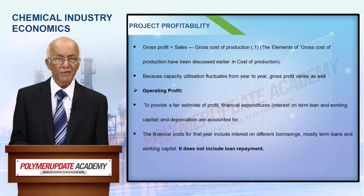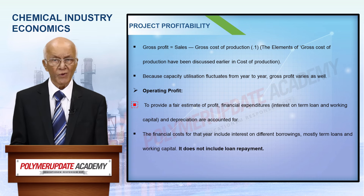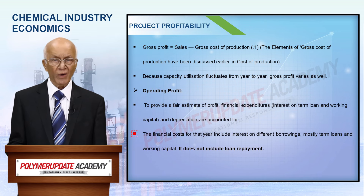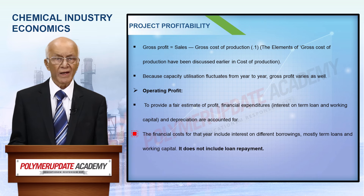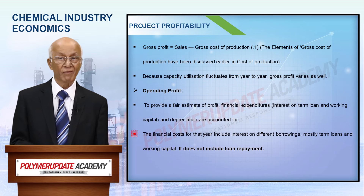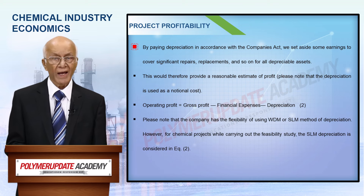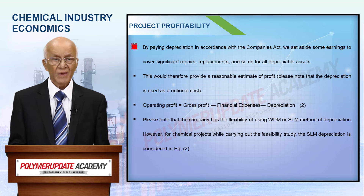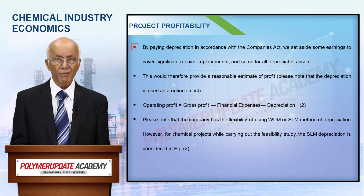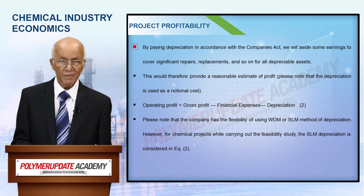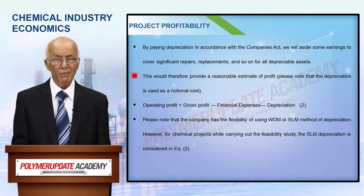Operating profit is computed by accounting for financial expenses — interest on term loan and working capital — and depreciation, to get a realistic estimate of profit. The financial expenses include interest for that particular year on various borrowings, mainly term loan and working capital. It does not include loan repayment — that is a very important point. By providing depreciation as per the Companies Act, we keep aside some profit to make provision for major repairs, investments, replacements, etc. for all depreciable assets to function. This gives a realistic estimate of profit.